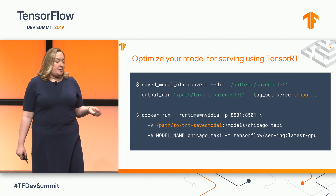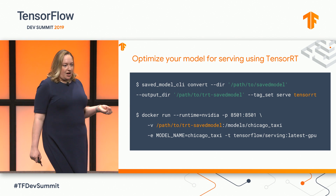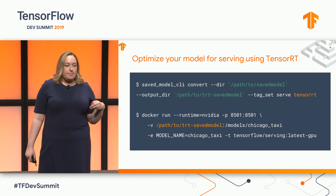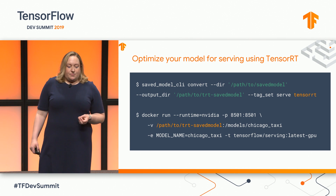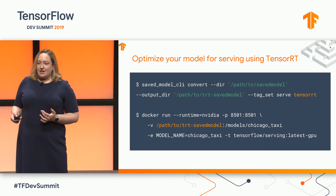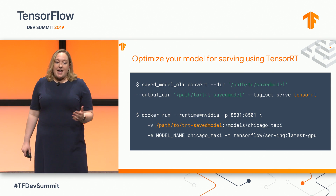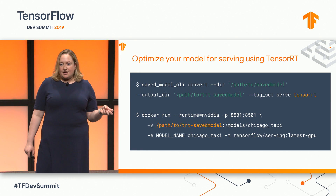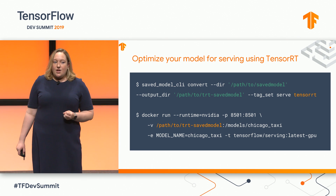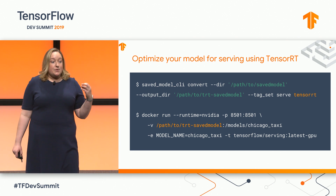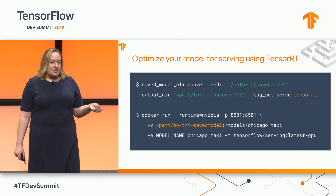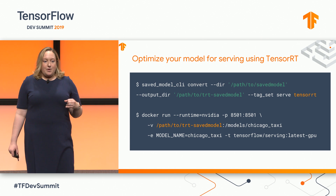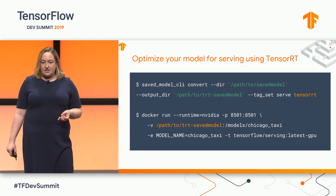If you need even further optimization, we now support optimizing your model for serving using TensorRT. TensorRT is a platform from NVIDIA for optimized deep learning inference. Your Chicago taxi example probably wouldn't benefit from this, but if you had, say, an image recognition model like a ResNet, you could really get some performance boosting and cost savings by using TensorRT. We provide a command line that allows you to convert this saved model into a TensorRT optimized model — then again, a very simple change to that original command line, and you're running on accelerated GPU hardware with TensorRT optimization.